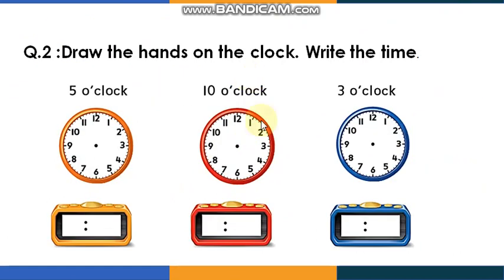Now what you are going to do is draw the hands on the clock. Who can read the time? Five o'clock — well done! And over here? Ten o'clock. And the last one? Three o'clock. Good readers!